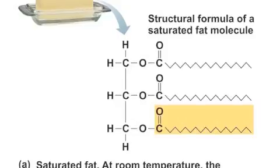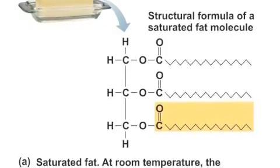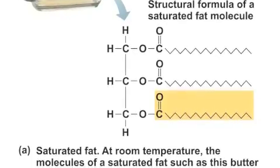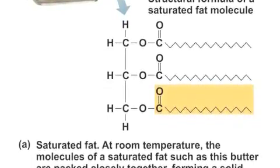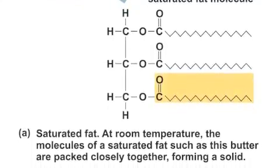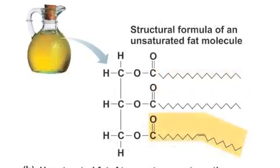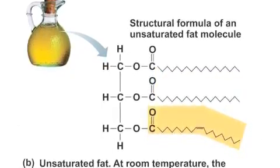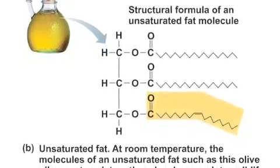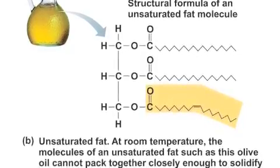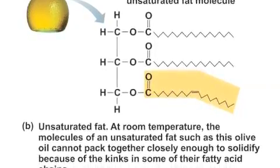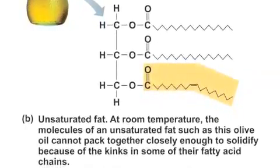The single bonds in saturated fats make those fatty acids straight, so they can be packed very closely together. That makes them solid at room temperature. These are our animal fats like butter or lard. In unsaturated fats, the molecules cannot pack as closely because of the kinks from the double bonds, so they are liquid at room temperature. A good example is olive oil.